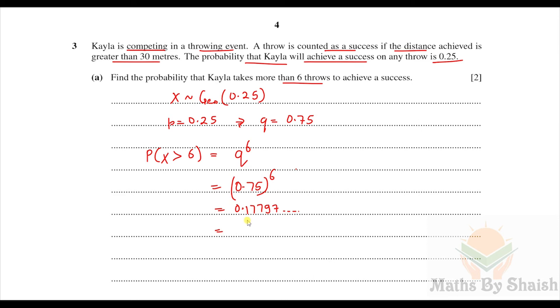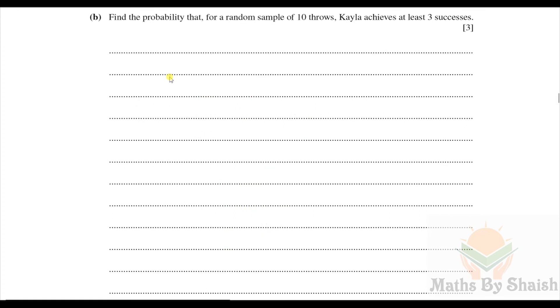Taking more than six throws means the first six were all failures, so the probability is q⁶ = 0.75⁶ ≈ 0.178 (to three significant figures).